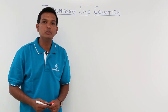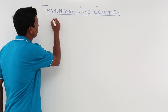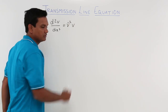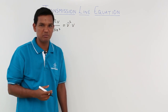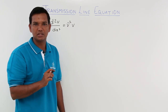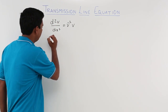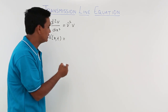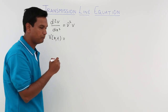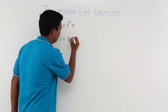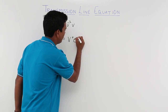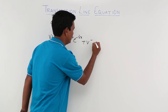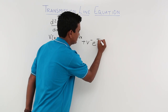In the previous video, we concluded this equation: d²V/dx² = γ²V. We will continue from the same equation. If I solve this equation, I am going to get something in terms of V(x,t) — that is voltage in terms of space and time — which is V+ e^(-γx) + V- e^(+γx).